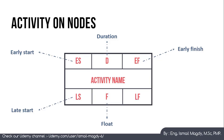Float (TF) is the total duration an activity can be delayed without affecting the overall schedule. Finally, LF (Late Finish) is the latest date the activity can finish without affecting the schedule; it equals Late Start plus Duration and will equal Early Finish for critical activities when float is zero. This may seem confusing at first, but it becomes simple once we solve an example.